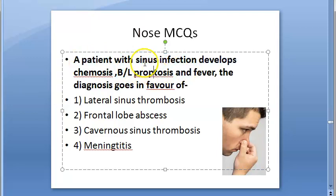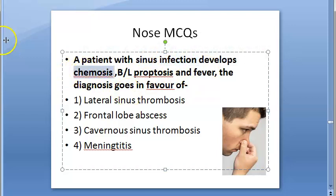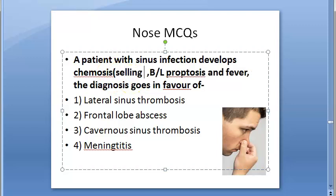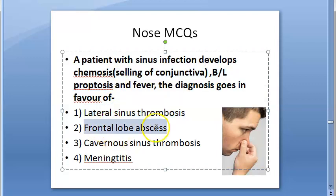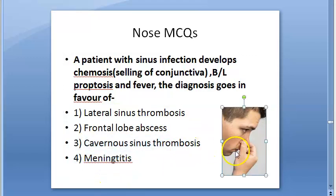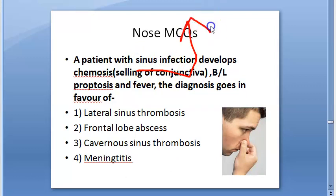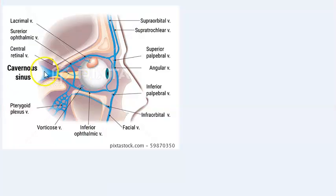A patient with sinus infection develops chemosis, bilateral proptosis, and fever. Chemosis means swelling or edema of the conjunctiva. Both proptosis and chemosis are eye-related signs. The options are lateral sinus thrombosis, frontal lobe abscess, cavernous sinus thrombosis, and meningitis. The answer is cavernous sinus thrombosis.